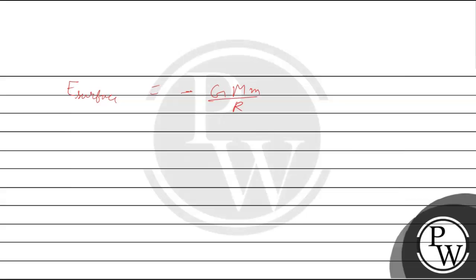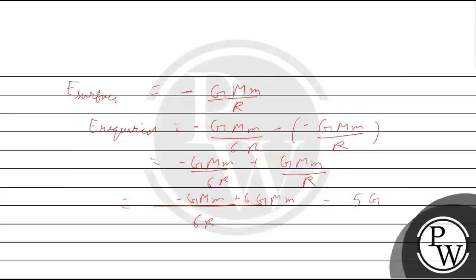So from surface to orbit, we need energy required which is minus GMm upon 6R minus (minus GMm upon R). This equals minus GMm upon 6R plus GMm upon R, which gives us 5GMm upon 6R.